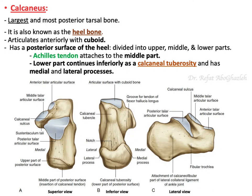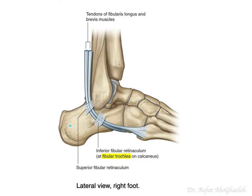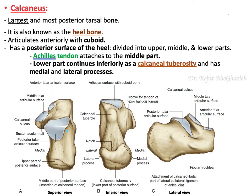The calcaneus is the largest and most posterior tarsal bone. Looking at it here, you can see it articulates anteriorly with the cuboid — remember: calcaneus with cuboid, C with C. Here is the articular surface for the cuboid bone, located anteriorly.